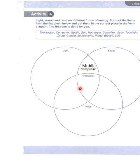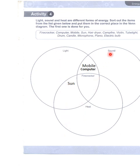Then is mobile — mobile again can do the same things. Mobile سے آپ کو light بھی ملتی ہے، sound بھی ملتی ہے، اور heat بھی ملتی ہے۔ Then is sun — sun جو ہے وہ light دیتا ہے اور heat energy ہوتی ہے، لیکن sun سے کوئی sound نہیں آتی۔